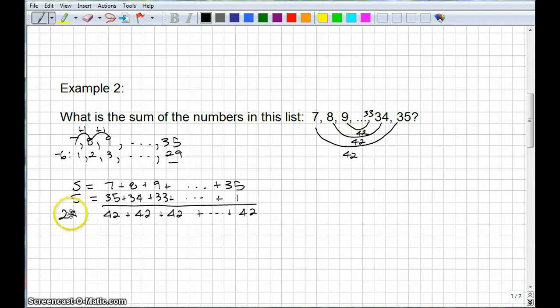And that is going to be 2S. So, 2S is 42 added together, how many times? We've got 29 numbers in this list. So, this sum is equal to 42 times 29. And S, then, will be equal to 42 times 29 all over 2. And, if we do that, we should get 609 is our answer.